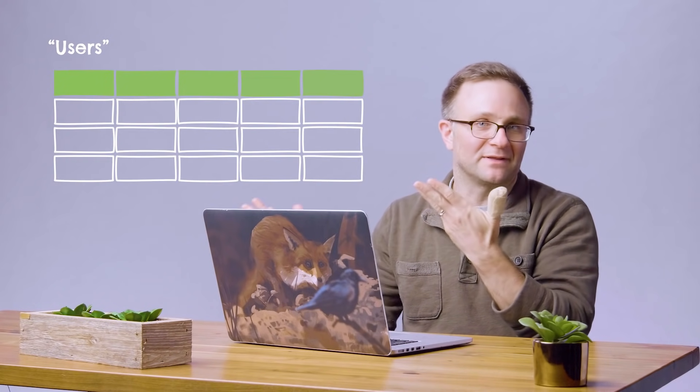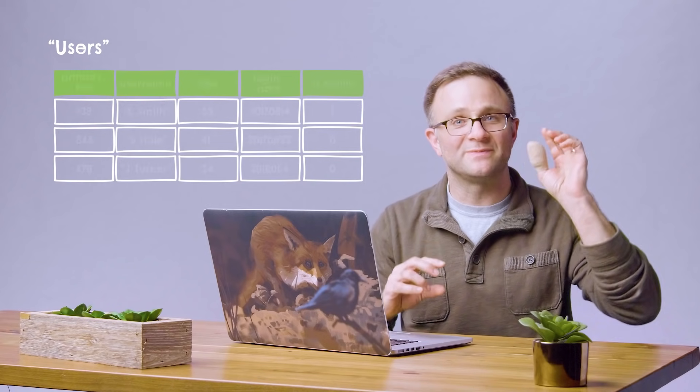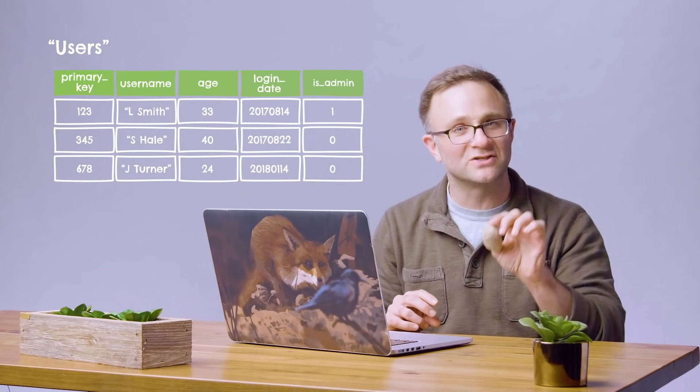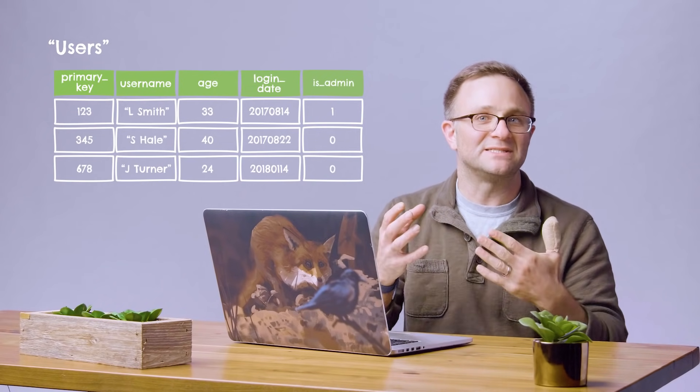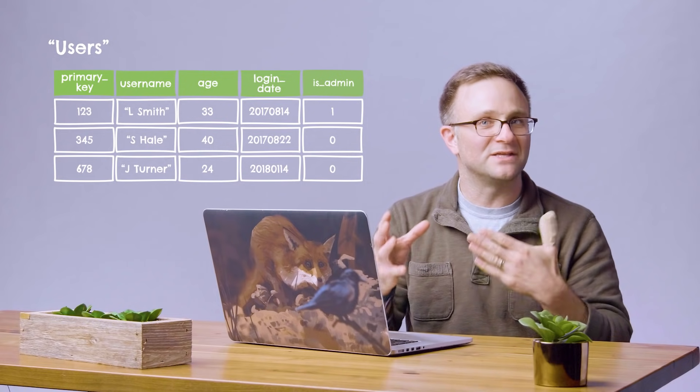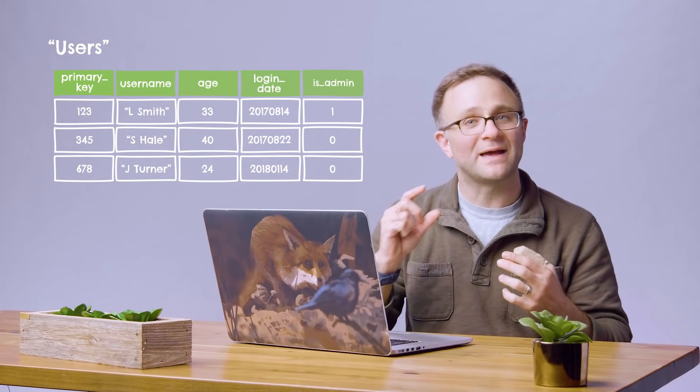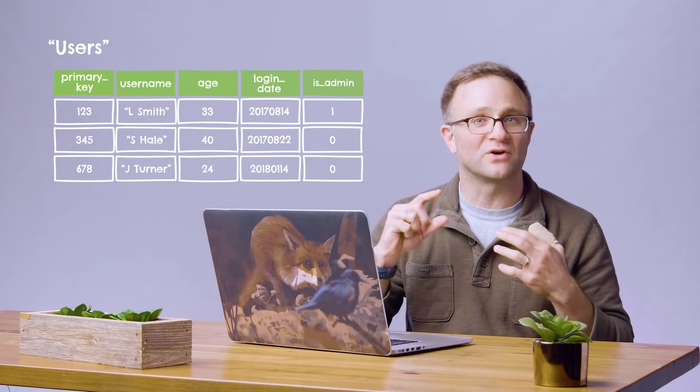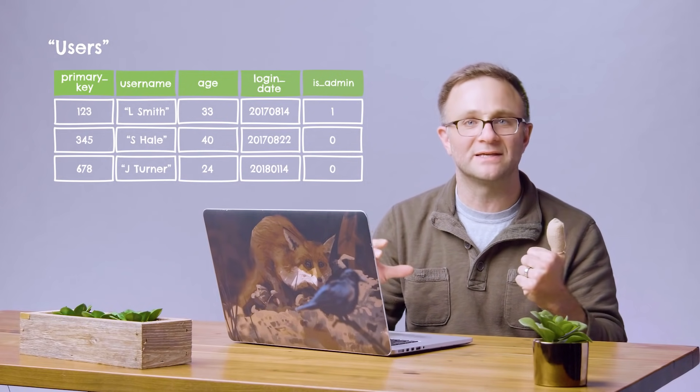But for the rest of you, if you're used to traditional relational databases — things like MySQL or mobile frameworks like SQLite or Core Data — you're probably used to keeping all your data in tables. Every table has its own schema, which means that every row in that table is very strictly defined. You have a specific set of columns per row, and every column has its own strict rules about what kind of data type goes in there.